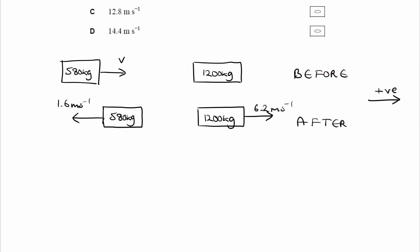So the initial momentum would be... Remember that momentum is equal to mass times velocity. So the initial momentum would be 580 times v. And that would be positive as it's going towards the right.